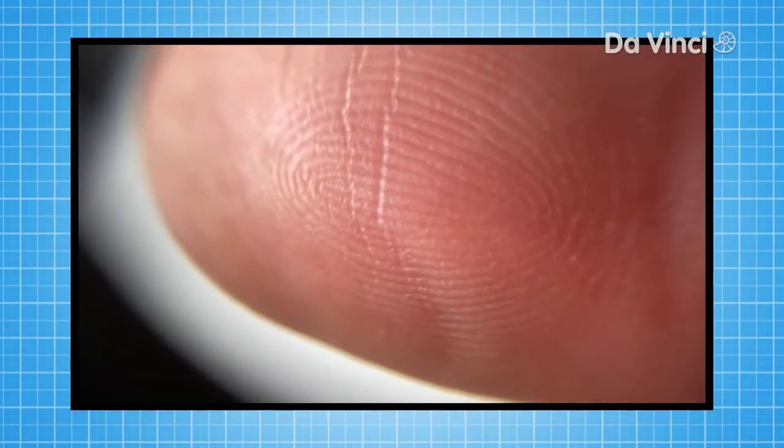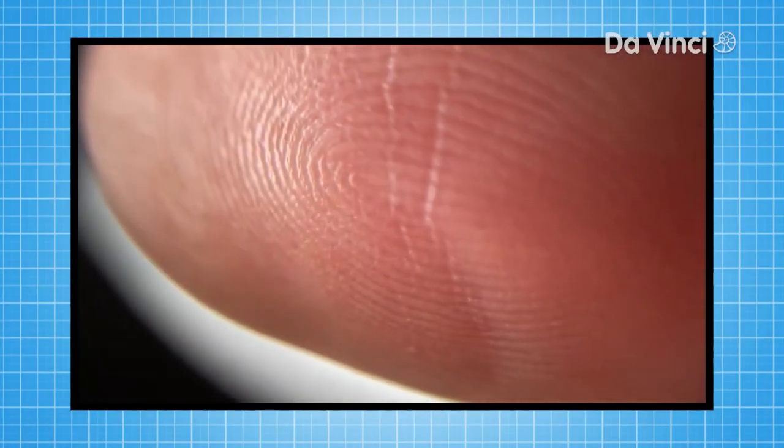This zoomed-in view allows you to clearly see the pattern of curved lines on Chris's finger.